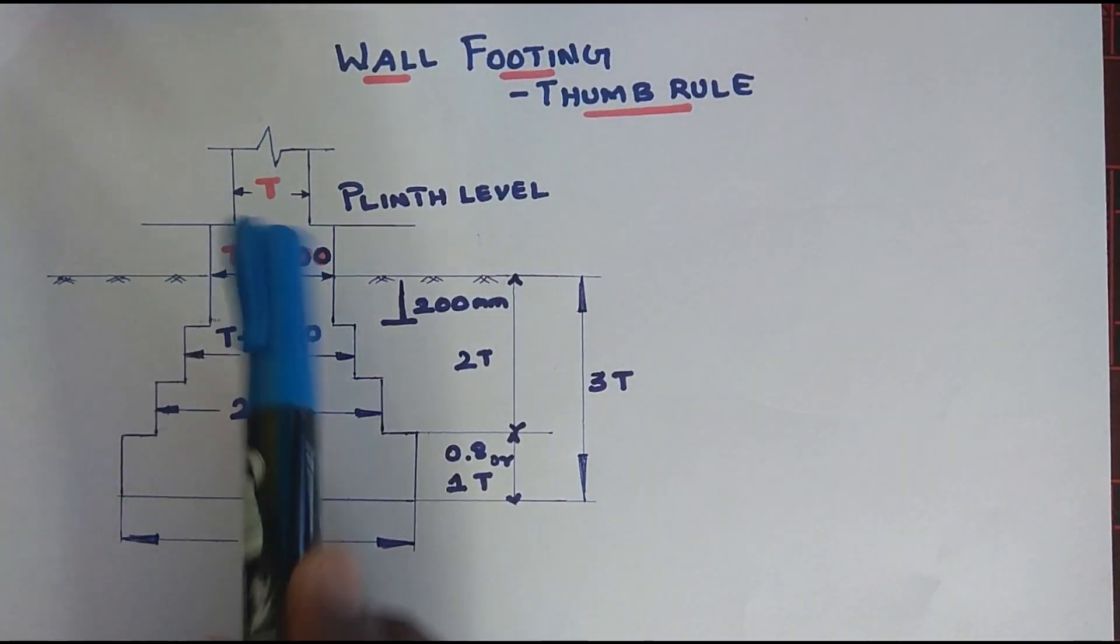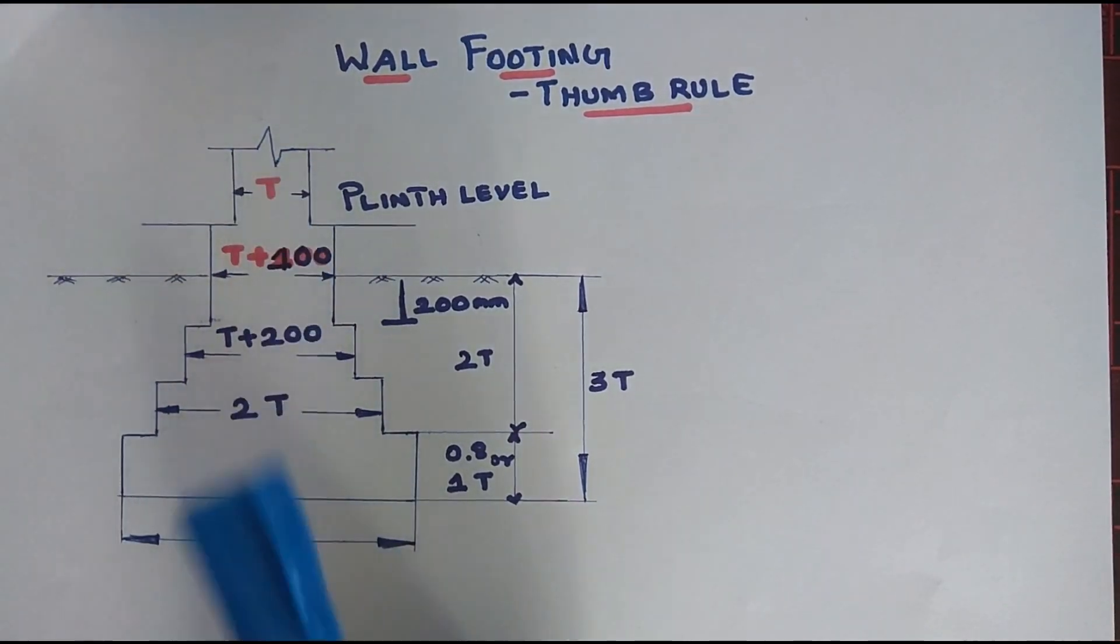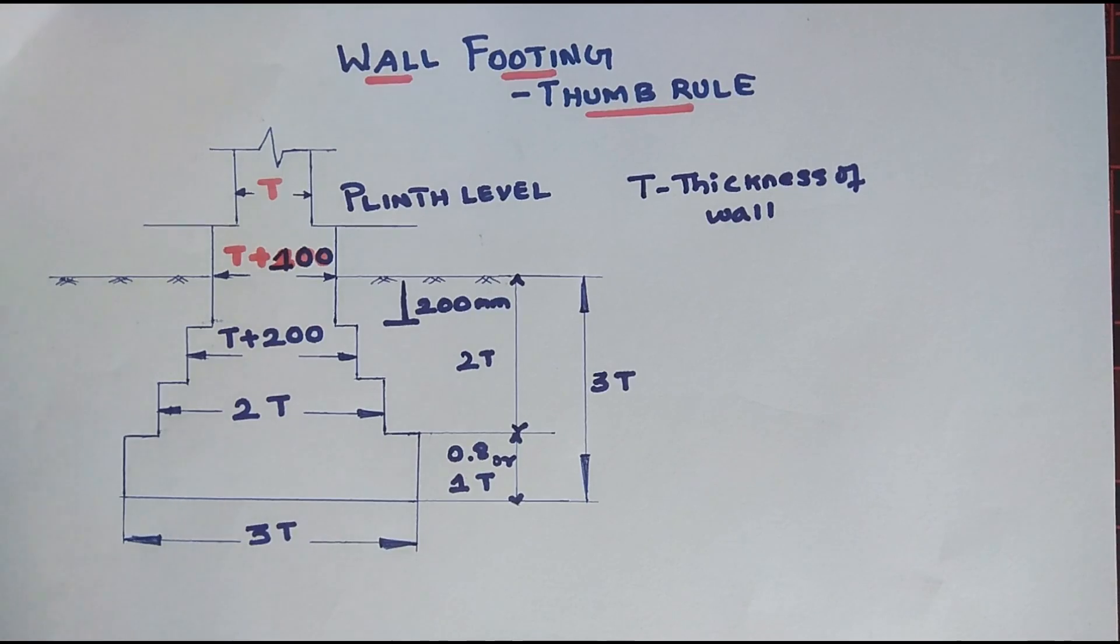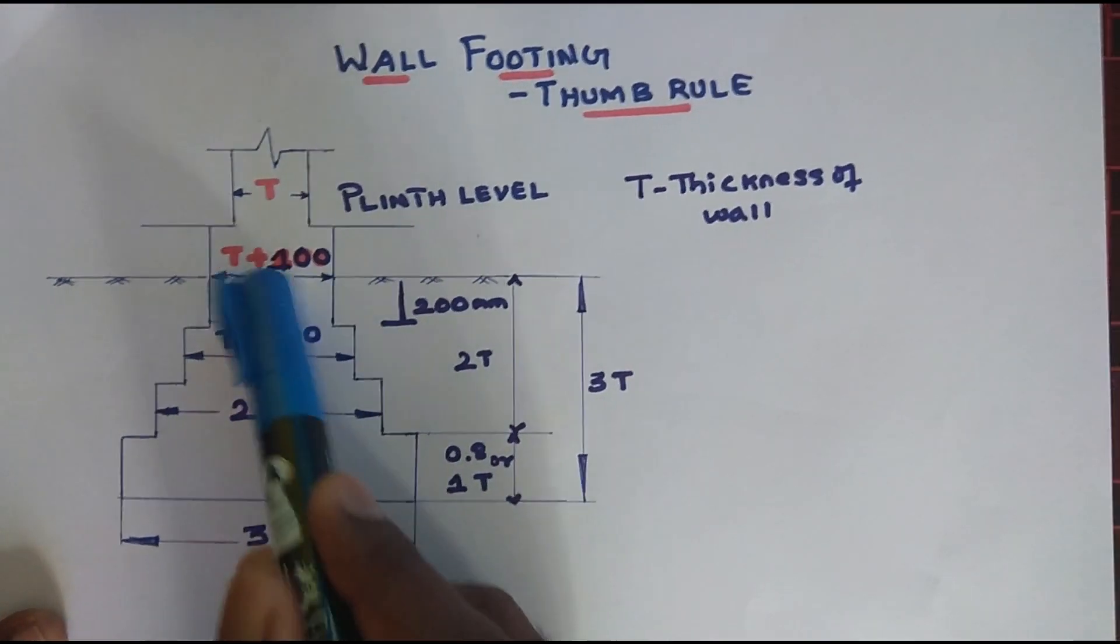Let's look at the footings. First, the wall. T is the thickness of wall. T is the thickness of wall.